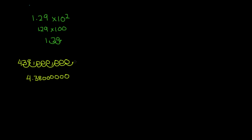Remember, every time we move the decimal point from right to left, we were dividing by 10. So if we want to rewrite that, we're going to multiply by 10 to the power of however many times we moved it. We moved it 8 times, so we write this as 4.38 times 10 to the power of 8. You can always drop the trailing zeros at the end of decimals, so we really don't need all six zeros. We can simply write this as 4.38 times 10 to the power of 8. This is how scientists use scientific notation to rewrite big numbers — 438 million simply becomes 4.38 times 10 to the power of 8.